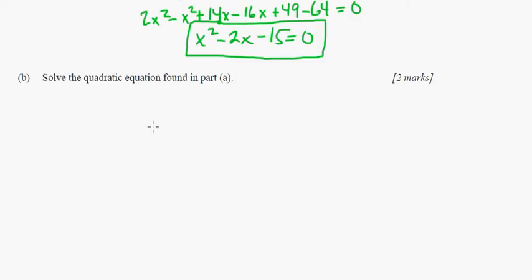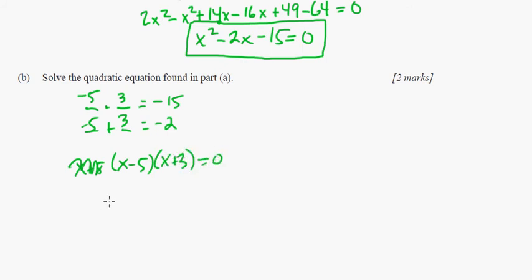So part B says solve the quadratic equation found in part A. So I just moved the page down here a little bit. So we can do this pretty easily. What times what equals A times C, which is -15, and what plus what equals -2? Well, let's see, 5 and 3 look good, but it's negative. So it's going to be -5 and +3. So our answer here is going to be (x-5)(x+3) = 0. So your answers are going to be 5 and -3, x equals 5 and -3.